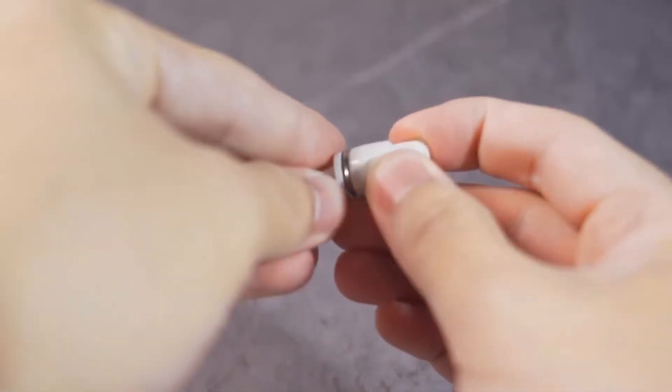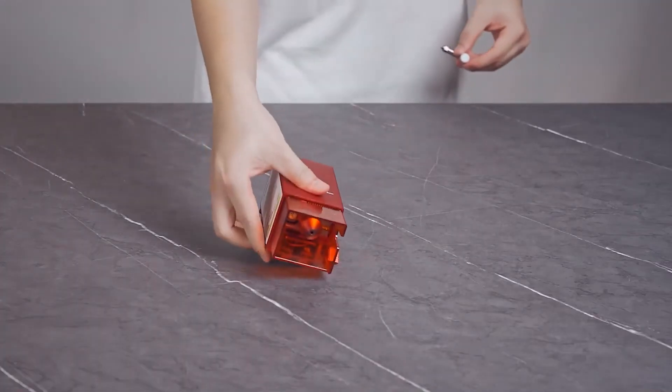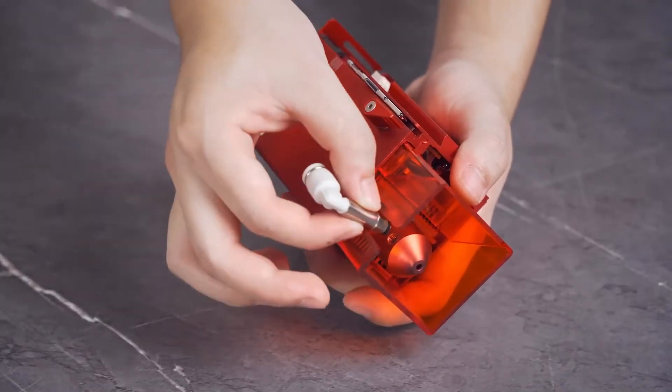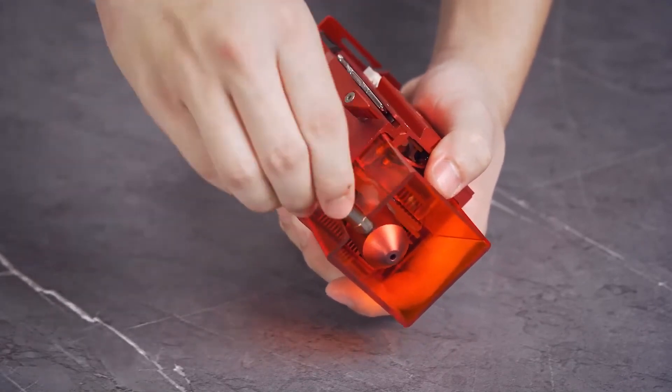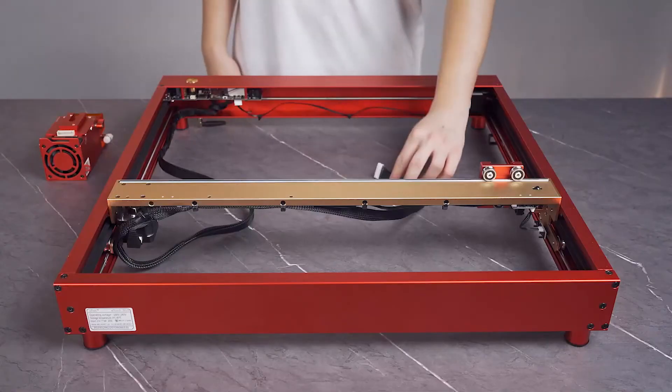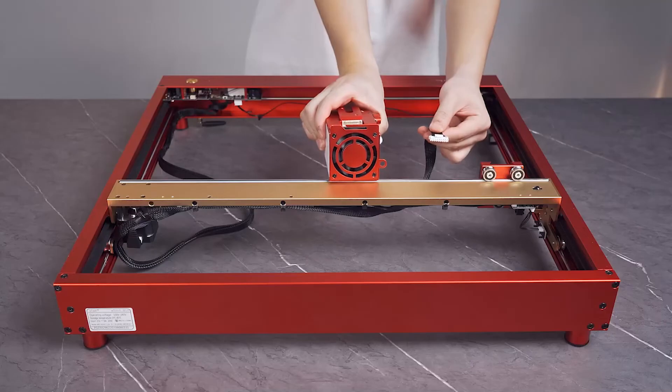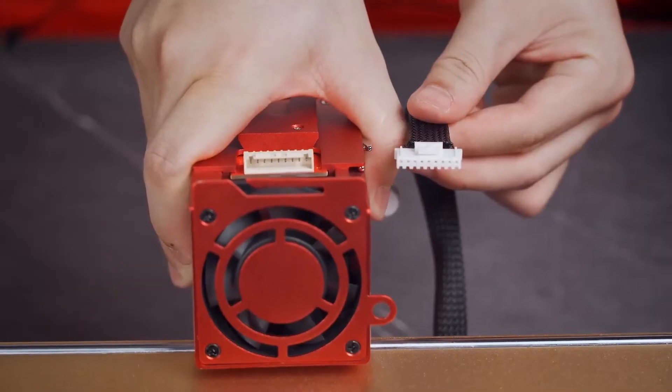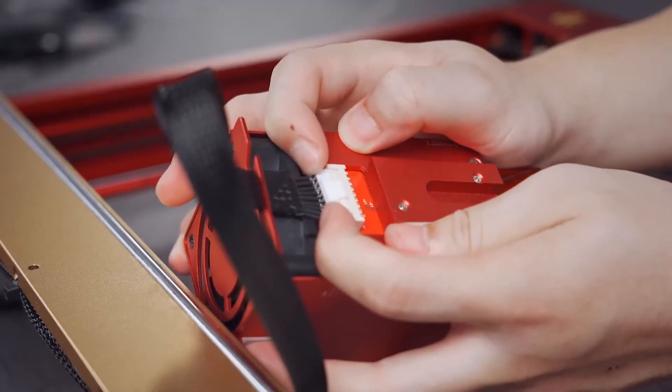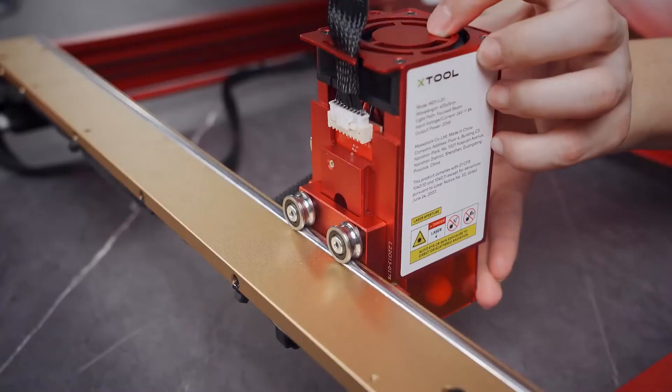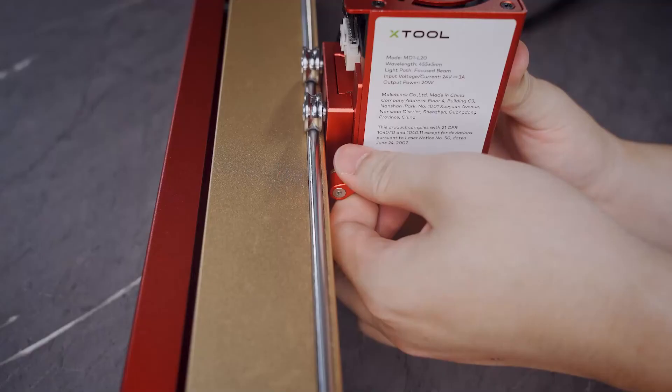Insert the plug. Install the nozzle connector. Connect the main control board and laser module. Fit the laser module on the middle plate.